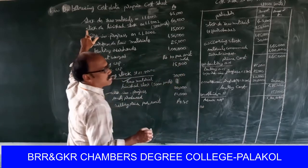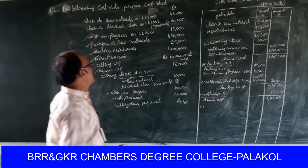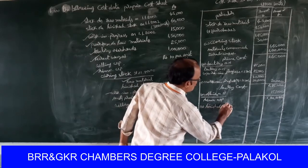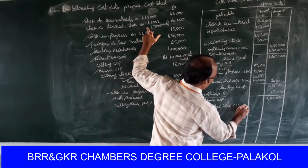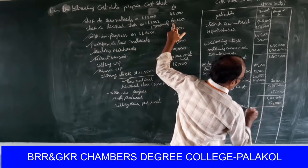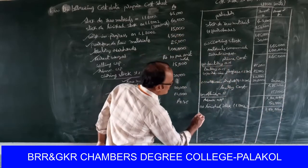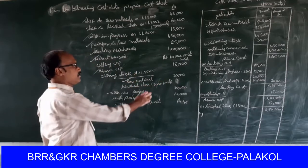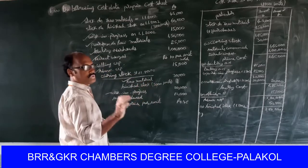Opening stock of finished goods is treated under office overheads. Finished stock as on 1/1/2002 for three thousand units: sixty thousand rupees. Total is three lakh sixty thousand. Now for closing finished stock: only two thousand units are available, value is not given — we must find out the value of two thousand units.